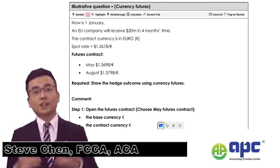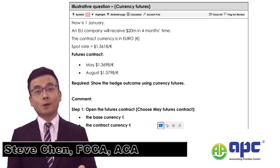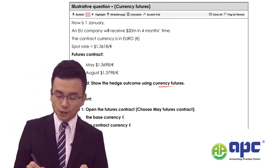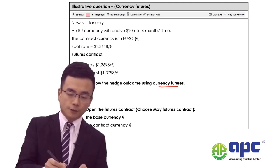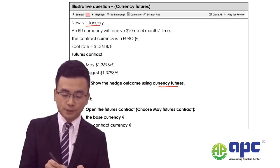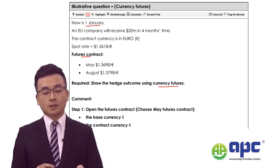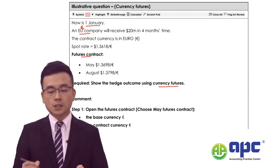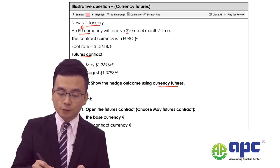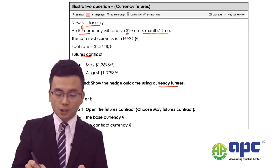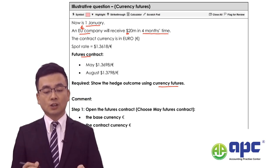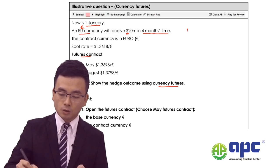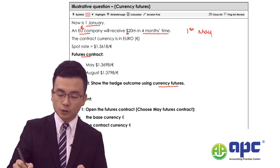Let's get started with the calculation example for currency futures. We want to show you the hedge outcome using currency futures. Now it's 1st January and we have an EU company, so our currency is in Euro, and we will be receiving the foreign currency in dollars in four months' time. This means we will be receiving that money on 1st May from our foreign customer.